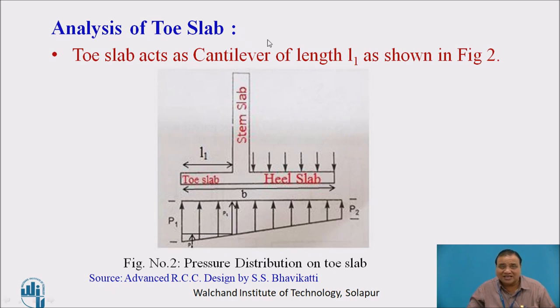Analysis of toe slab: the toe slab acts as a cantilever of length L1. This is the toe slab up to the face of stem slab. This is subjected to a varying pressure, P1 here and at this face it is P3. At this point it is P2. We are interested in only toe slab, therefore we will see only P1 and P3. P3 is the pressure ordinate at the face of stem.